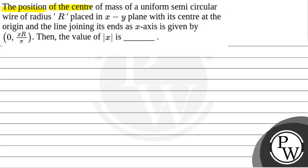The question says that the position of the center of mass of a uniform semicircular wire of radius r placed in xy plane with its center at origin and the line joining its end as x axis is given by 0, xr by pi. Then the value of mod x is what we need to find.